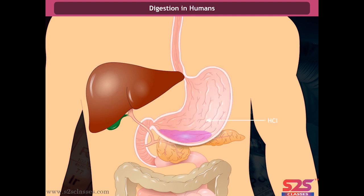The stomach has an acidic environment. The hydrochloric acid secreted by the stomach kills the bacteria that enter through food. The mucus secreted by the stomach protects its inner lining. Various digestive juices secreted by the stomach break down food into smaller substances. The stomach then opens into the small intestine.